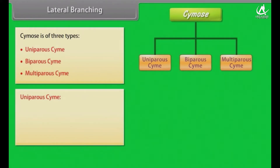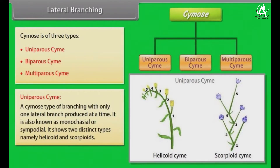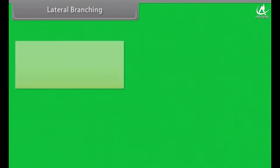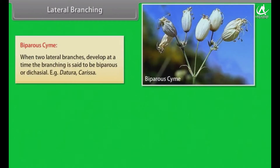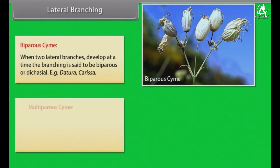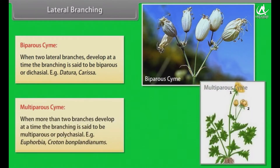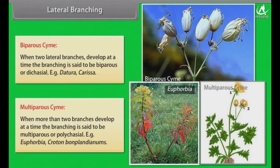Uniparous cymose: a cymose type of branching with only one lateral branch produced at a time is known as monochasial or sympodial. It shows two distinct types, namely helicoid and scorpioid. Biparous cymose: when two lateral branches develop at a time, it is called biparous or dichasial. Examples: Datura, Carissa. Multiparous cymose: when more than two branches develop at a time, the branching is said to be multiparous or polychasial. Examples: Euphorbia, Croton.